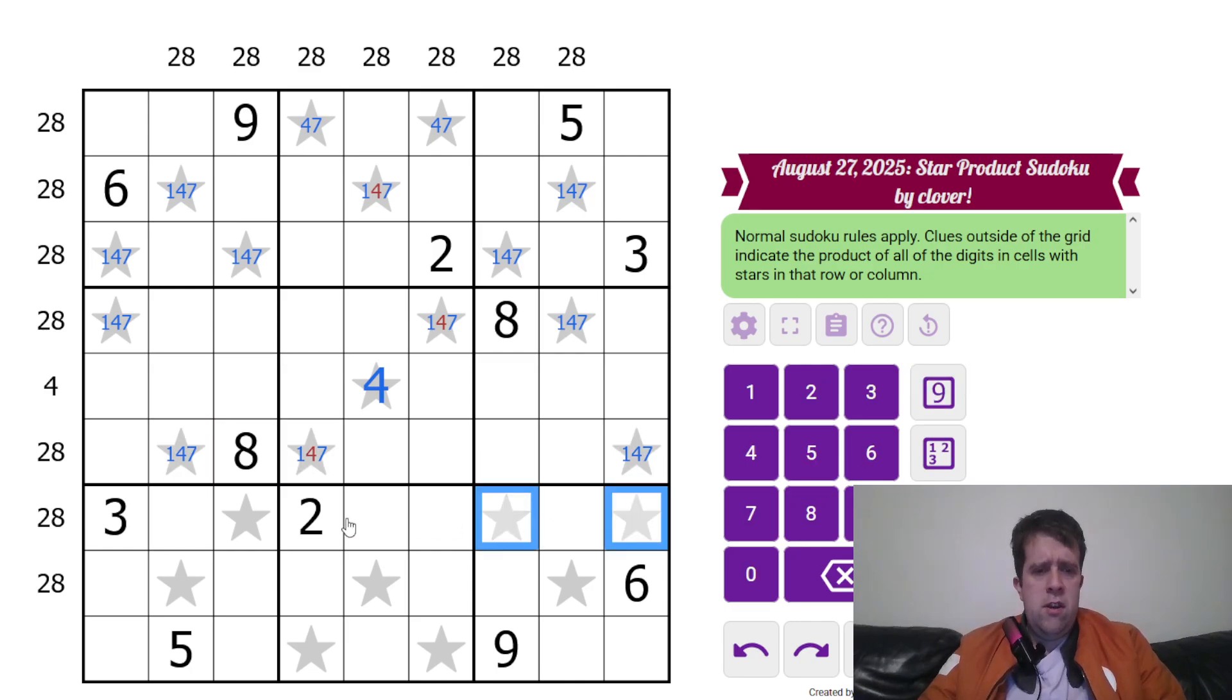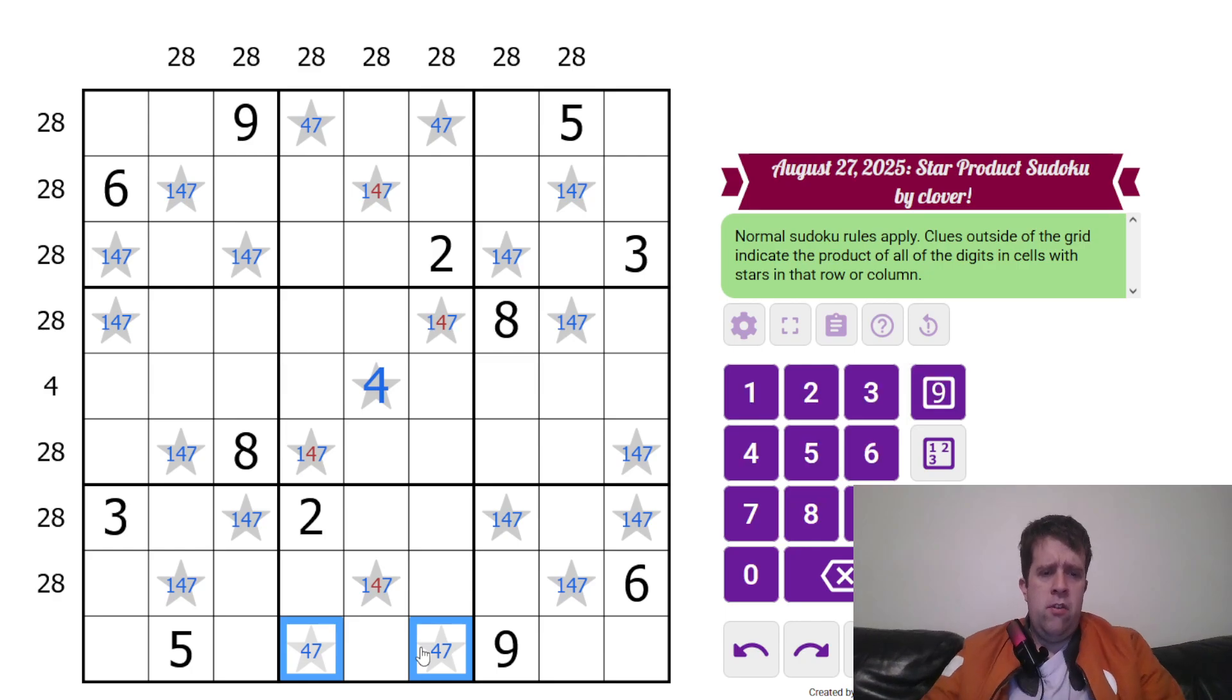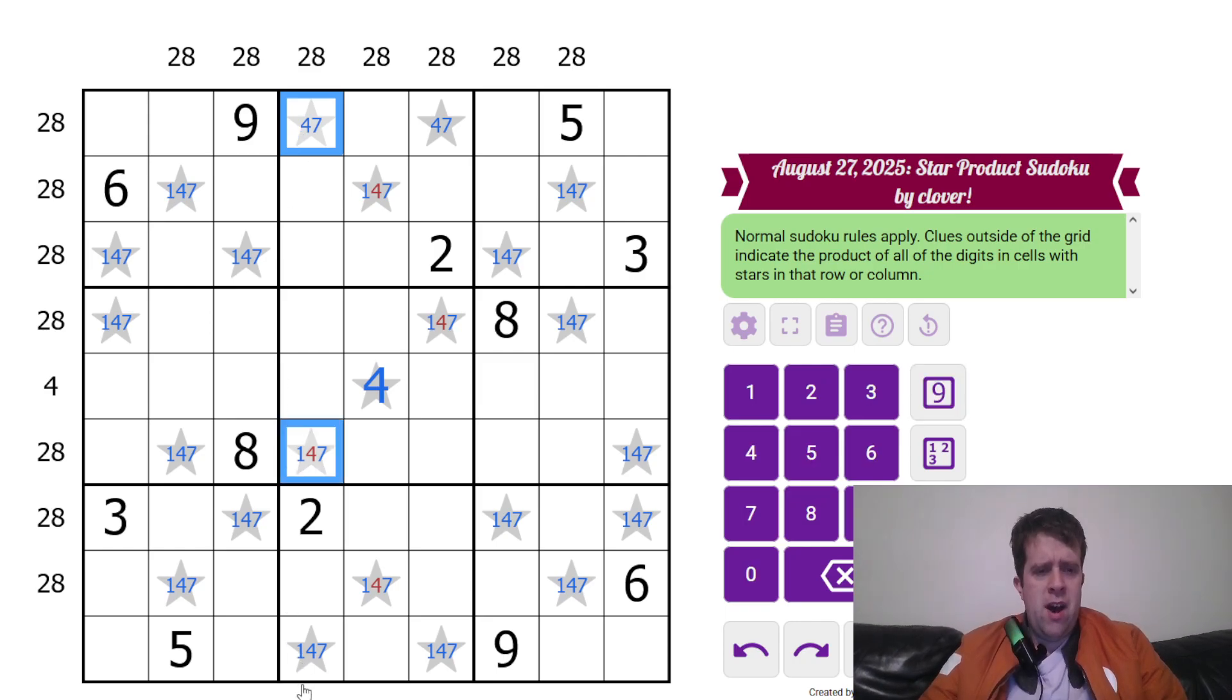And that's going to be true for every single row and column. One, four, seven. This is one, four, seven. This is one, four, seven. This is one, four, seven. And this is four and seven. So, and one, two, sorry. Why? Because I also have those.